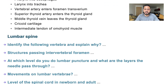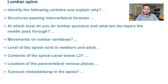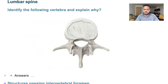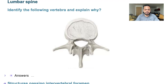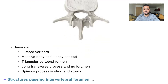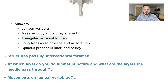Now the lumbar spine — a few questions here as well. A lumbar vertebra has a massive, kidney-shaped body, a narrow triangular vertebral foramen, short and sturdy spinous process, long transverse process, and no foramen inside.